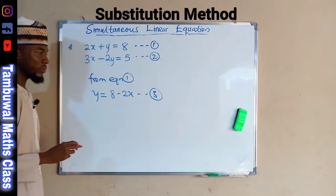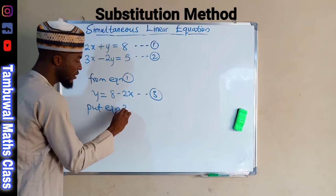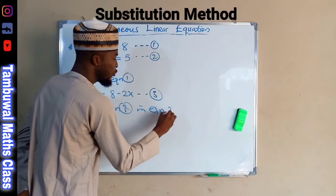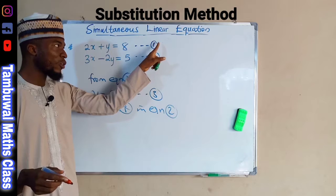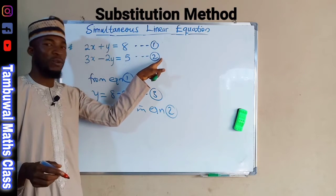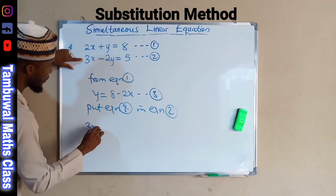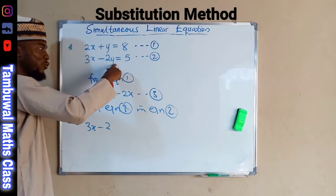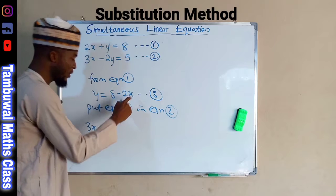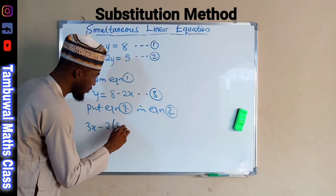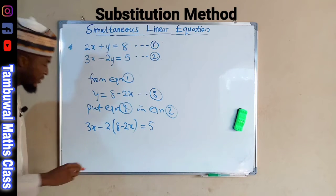What we are going to do is put equation 3 into equation 2, because equation 3 is formed from equation 1. Therefore we are not going to substitute it back into equation 1, but rather into the second equation. So we have 3x minus 2, and for y we substitute 8 minus 2x, giving us 3x minus 2(8 minus 2x) equals 5.